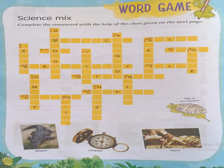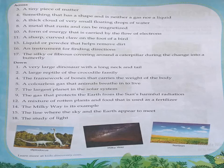Welcome back children. We are here again with a new lesson named Word Game. This word game is a science mix — it is based on the hints from science given on the next page. You have to fill this grid puzzle with the help of the clues given on the next page. Across and down hints are given. I'll be discussing the answers which you will be filling in the crossword.